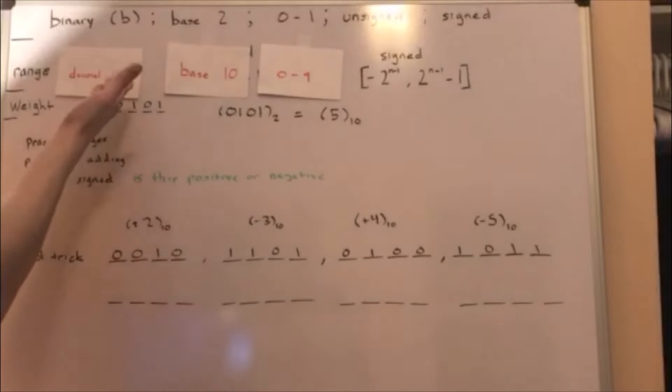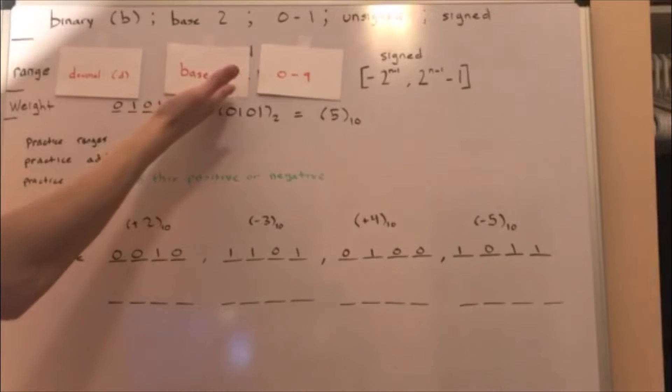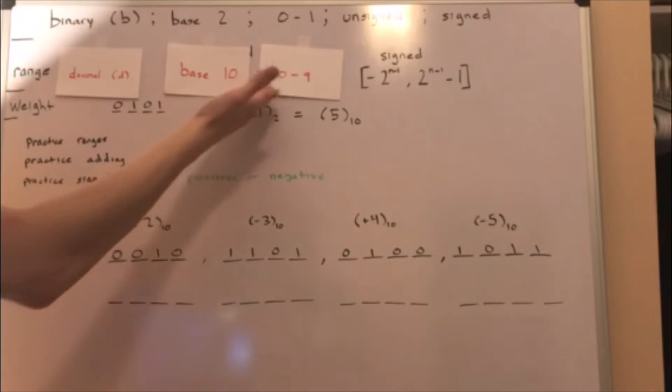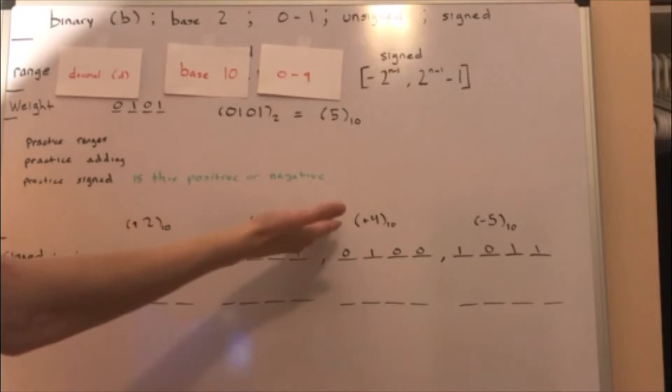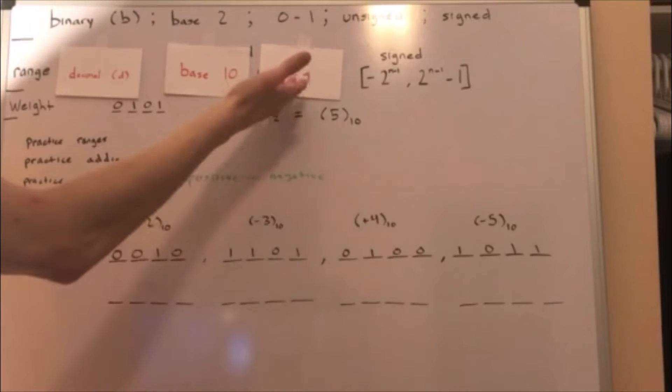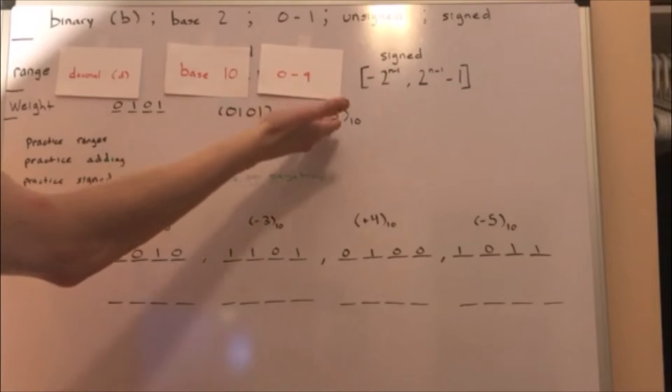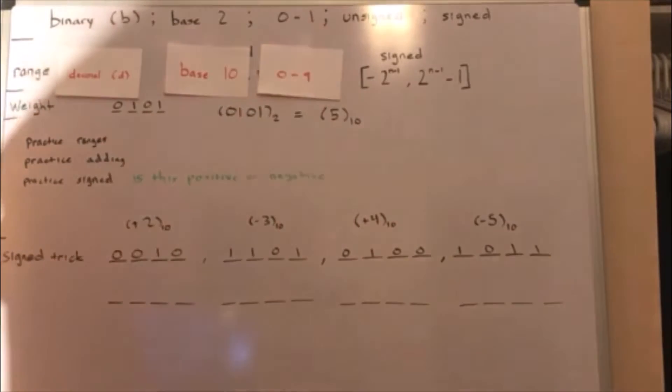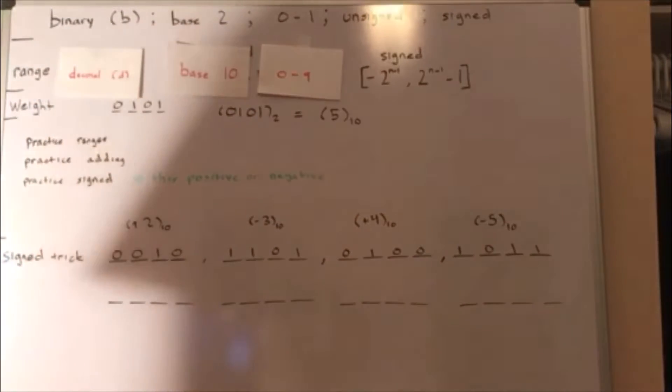Decimal numbers are base 10 numbers, and every digit in a decimal number can be a 0 through a 9.